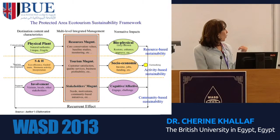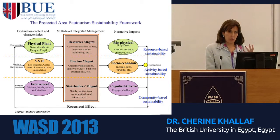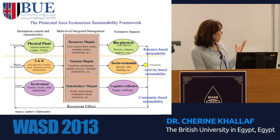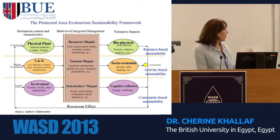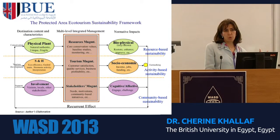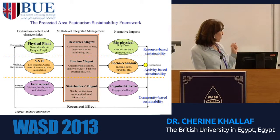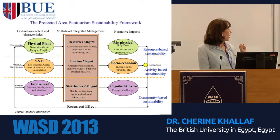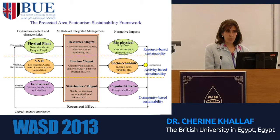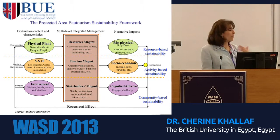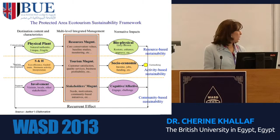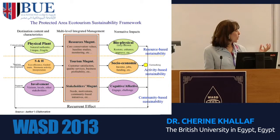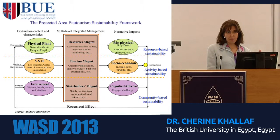On the second level, we have the operational part, which starts with services and hospitality specific to the tourism industry. It goes through tourism management to produce socioeconomic impacts. On the third level, we have the engagement level or the human factor — the involvement of the different stakeholders, whether they are visitors, local authorities, or others. They go into the stakeholder management process to produce what we call cognitive effects.